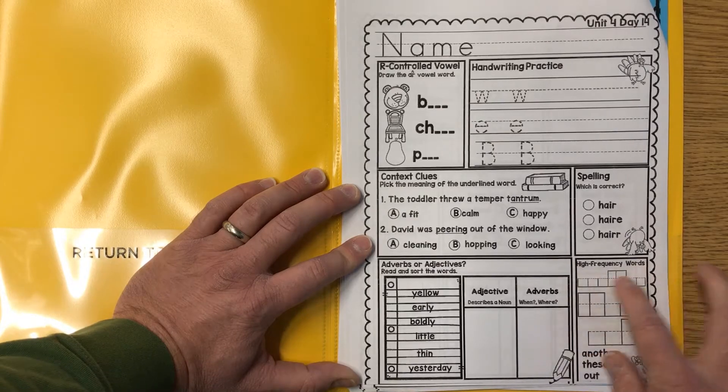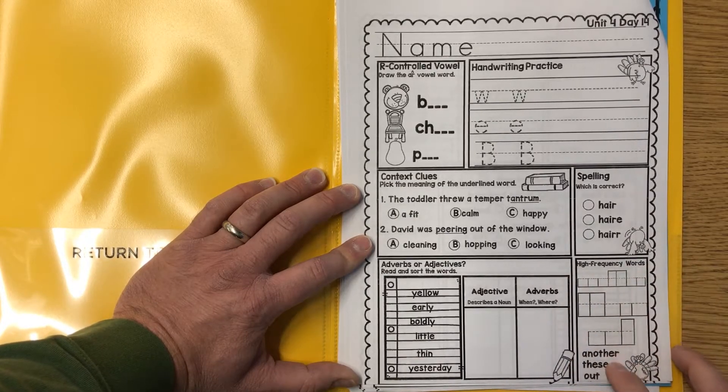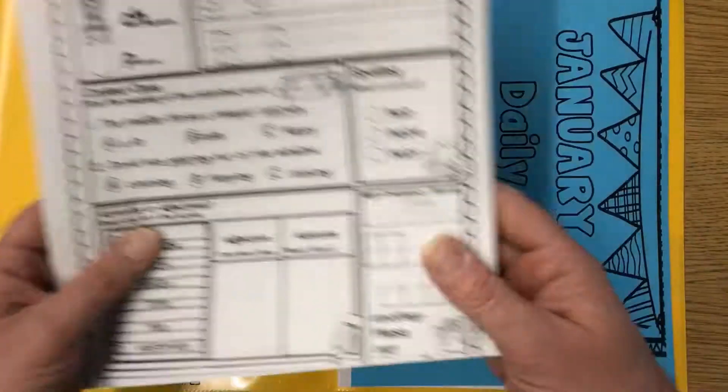High frequency words, here are some choices. Another, these and out. All right, let's go ahead and look at January daily math there.